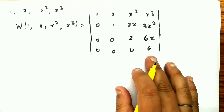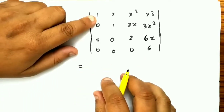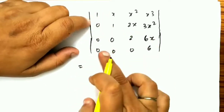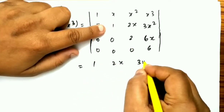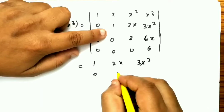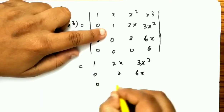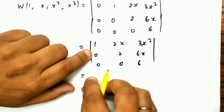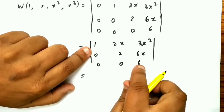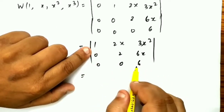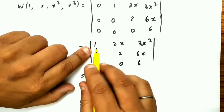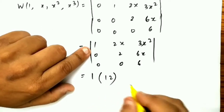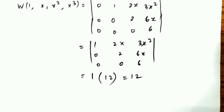We expand about the first column. Since the matrix is lower-triangular after expansion, the calculation simplifies step by step. Expanding gives 1 times the remaining 3×3 determinant, and continuing the expansion yields a final value of 12. So the Wronskian of 1, x, x², x³ is 12.